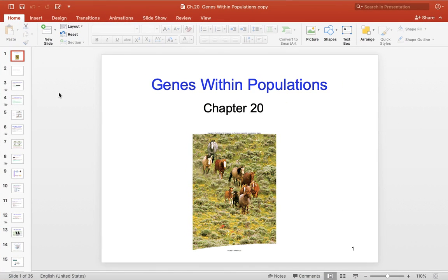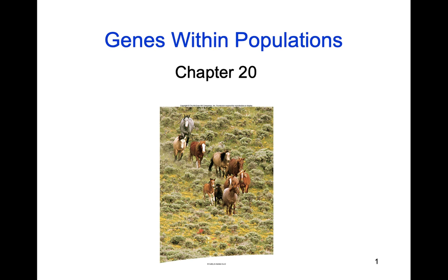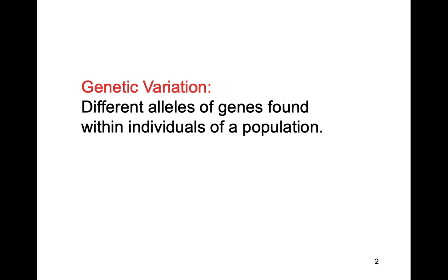Alright everybody, we are ready to start talking about chapter 20, which is all about gene populations, variation, and we will of course talk about some evolution. First thing you need to know is what genetic variation is: different alleles of genes found within individuals of a population. The more genetic variation there is in a population, the healthier that population is.